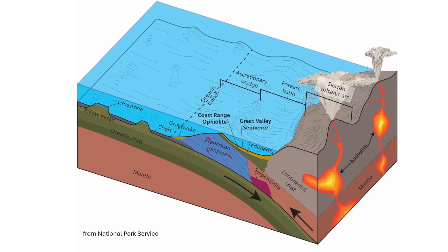Here we have a nice diagram showing how the Franciscan complex fits in with the tectonic setting at the time these rocks were deposited and then later accreted onto the edge of North America. On the right you can see the Sierra Nevada batholith — the chain of volcanoes that would have formed above this subduction zone where one plate was diving beneath the other. The Franciscan complex is just a series of rocks deposited out in the ocean, eventually carried up along the margin and scraped onto the continent — forming what we call the accretionary wedge, this zone where rocks are plastered up onto the continent.